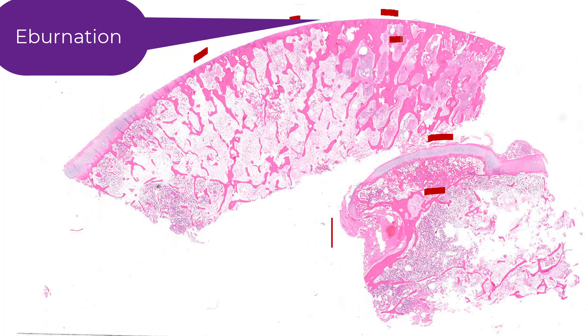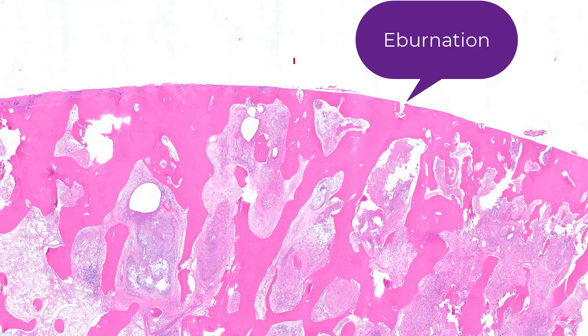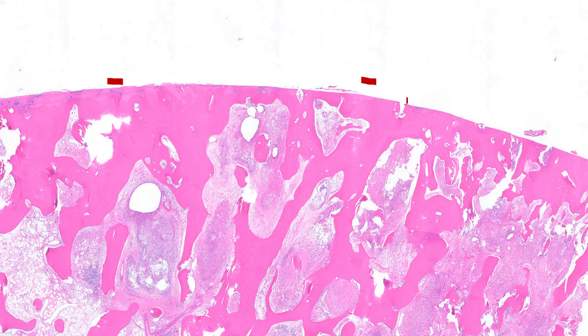We'll get a much better look at this on the next image. This is eburnation, and eburnation is the complete loss of articular cartilage. You'll notice there's a little bit of articular cartilage here, but there's virtually no cartilage. You'll also notice that eburnation shows this knife-like defect — it's as if somebody's taken a knife and cut that cartilage off.